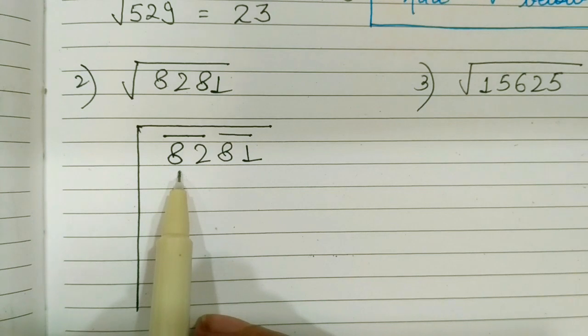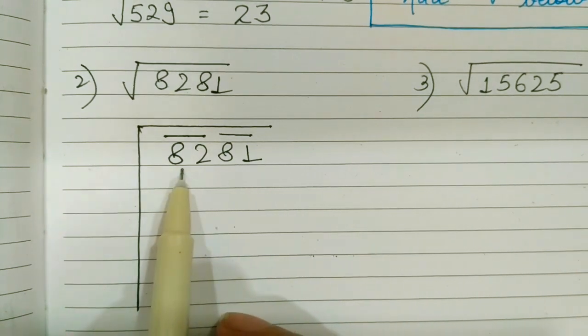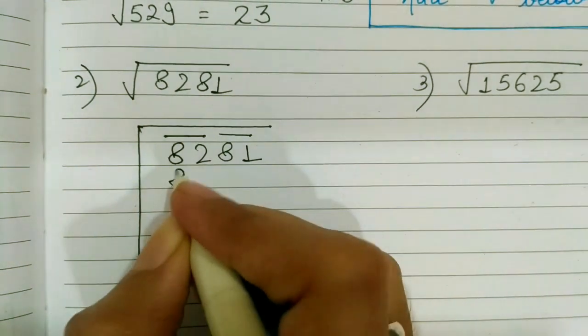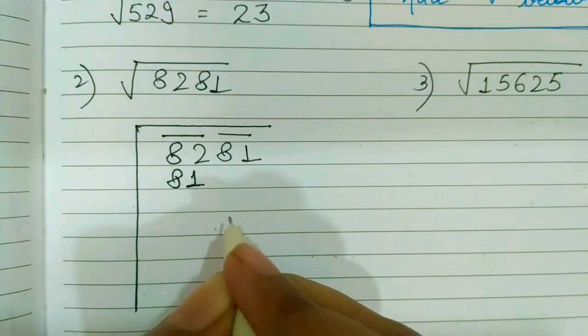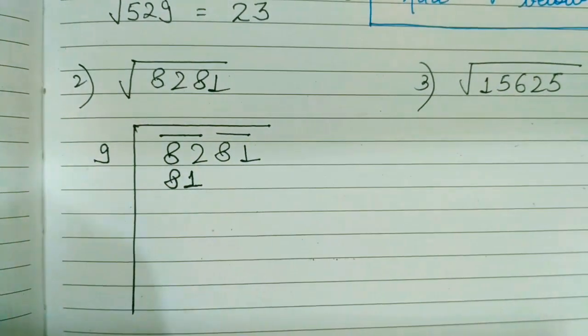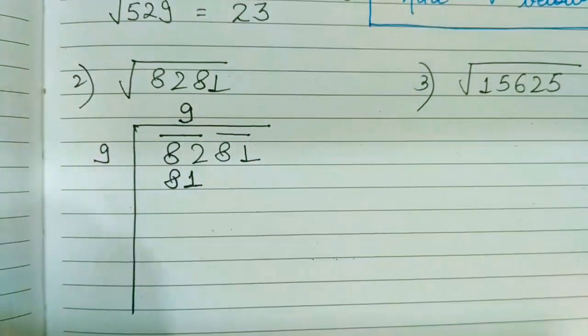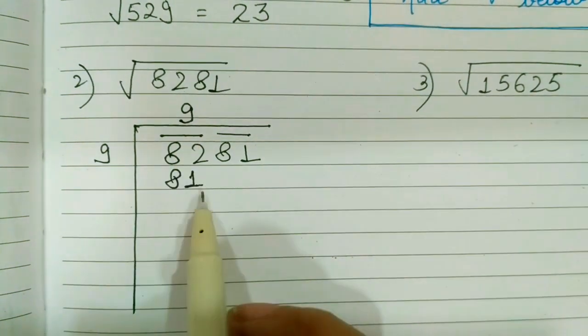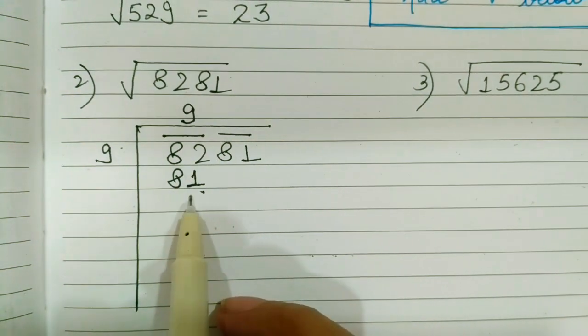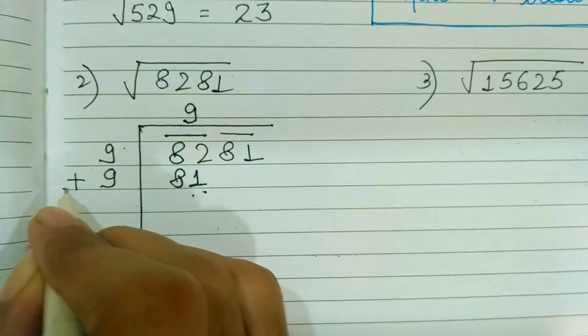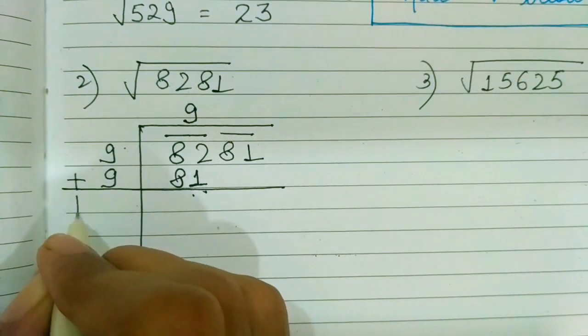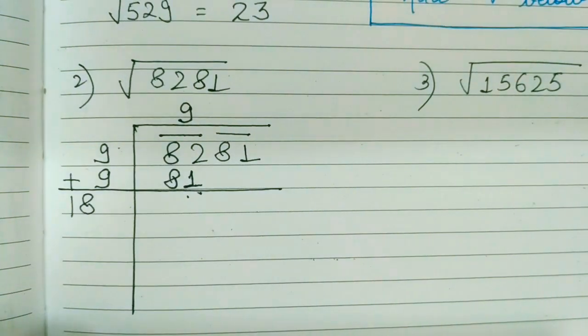Next is we have to search for a perfect square which is less than 82. 81 is the perfect square which is nearest to 82. And 81 is the perfect square of 9. So I am going to write 9. Multiply above, 9 nines are 81, and add below.